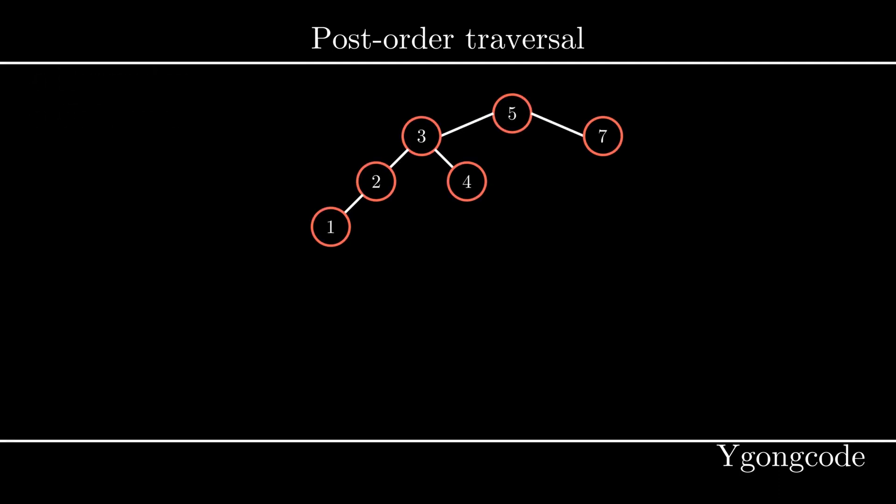Given a binary tree, a post-order traversal will always process the node after it finishes traversing both its left subtree and right subtree. This type of traversal is useful for deleting a tree starting from the childrenless nodes.